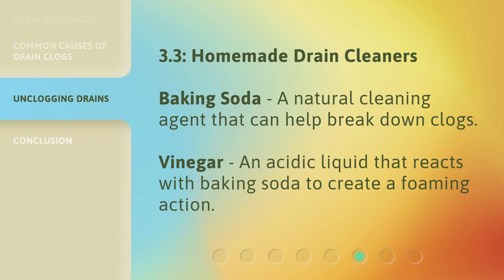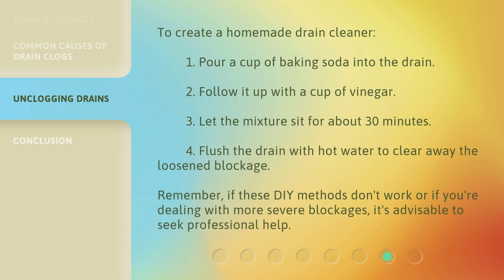Homemade drain cleaners. Baking soda: a natural cleaning agent that can help break down clogs. Vinegar: an acidic liquid that reacts with baking soda to create a foaming action. To create a homemade drain cleaner: 1. Pour a cup of baking soda into the drain. 2. Follow it up with a cup of vinegar. 3. Let the mixture sit for about 30 minutes. 4. Flush the drain with hot water to clear away the loosened blockage.